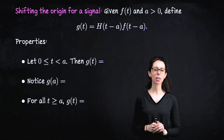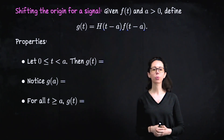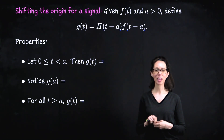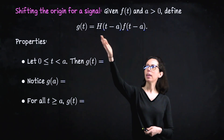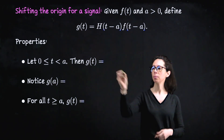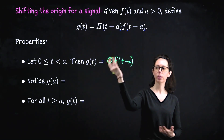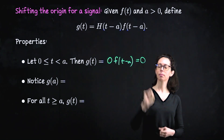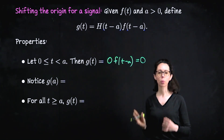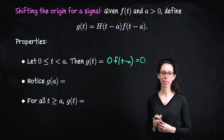Let's make sure this product does what we need. For time values smaller than a, plugging in gives a negative input to the Heaviside function, which gives zero, so we have zero times our signal — which is zero. This indicates our external forcing will not be applied when time is less than a, i.e., before a seconds have gone by.